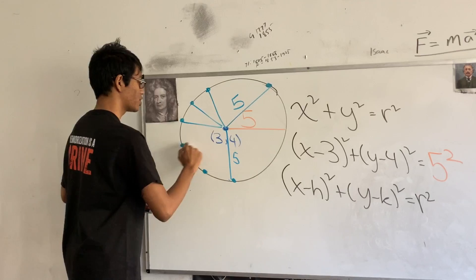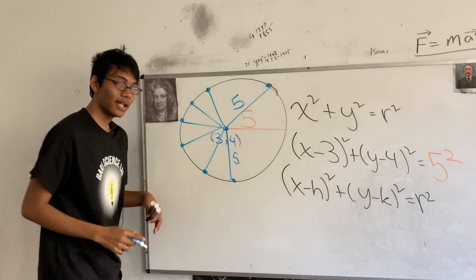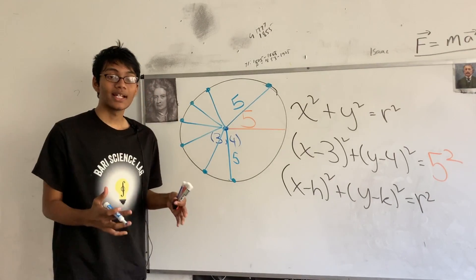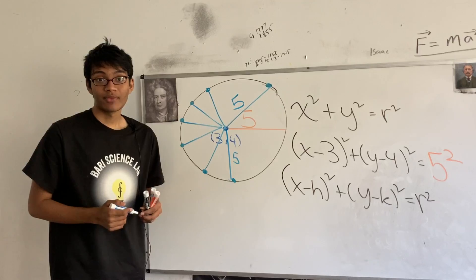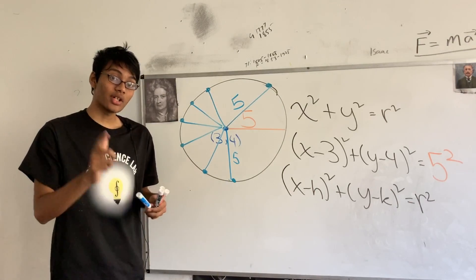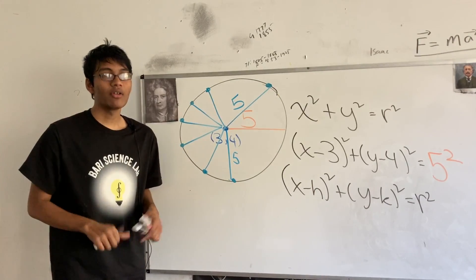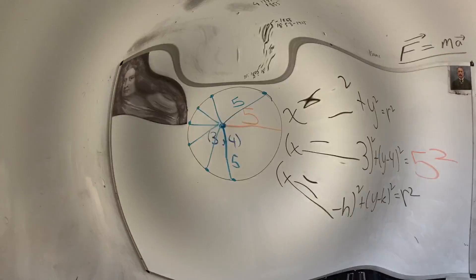And that's what makes a circle so magical, so symmetric. Every point on the circle is going to be equidistant from the center. Alright folks, thanks for watching. That's all about the circle. Tomorrow, we're going to check out the parabola. I'll see you again tomorrow.